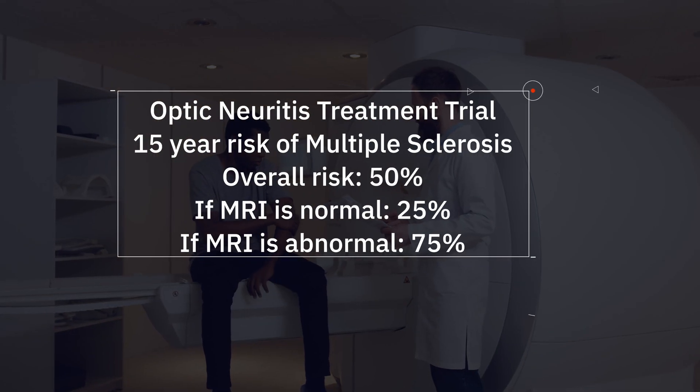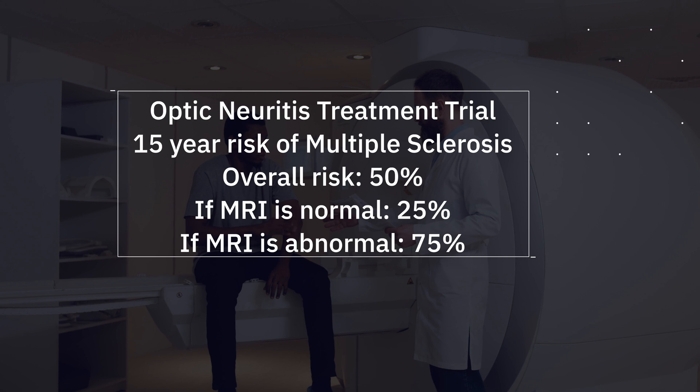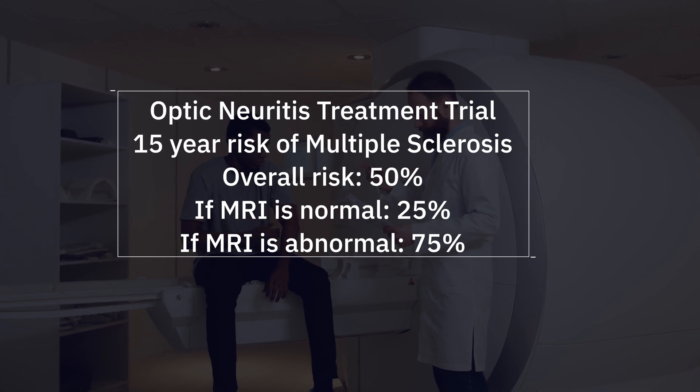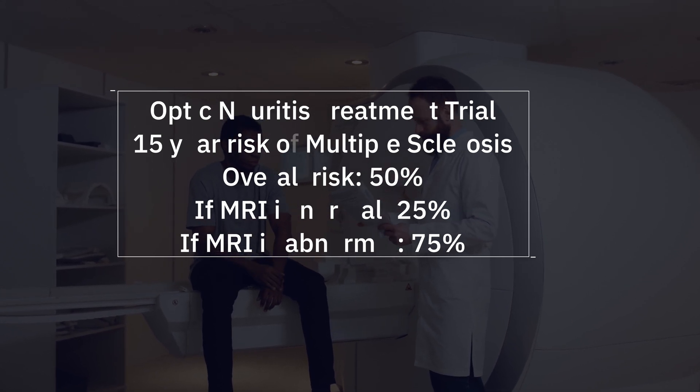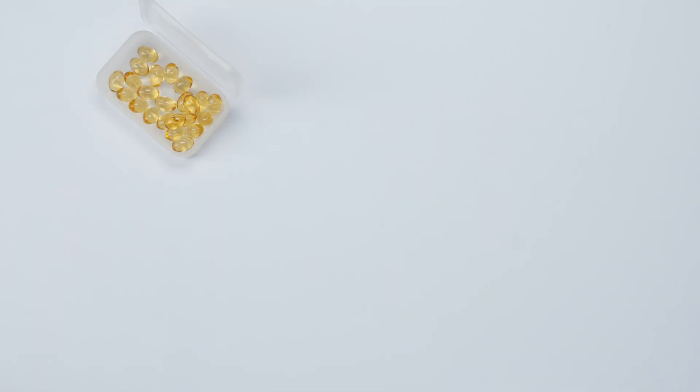If your MRI is completely normal, the likelihood of you getting multiple sclerosis is about 25%. In contrast, if your MRI shows changes classic with multiple sclerosis — such as white matter lesions — that probability increases to 75%. The reason this matters so much is that if we catch multiple sclerosis early, we can start medications to decrease that likelihood. The medication is Avonex, an interferon medication intended to decrease the likelihood of developing multiple sclerosis. That's why the MRI is so important.